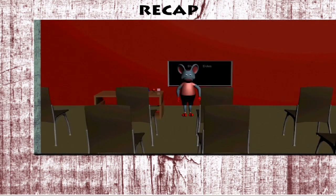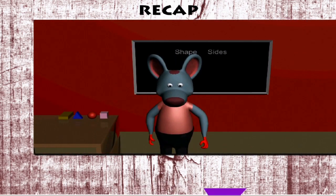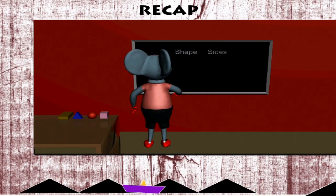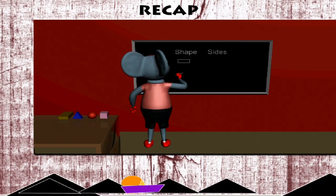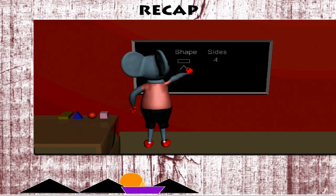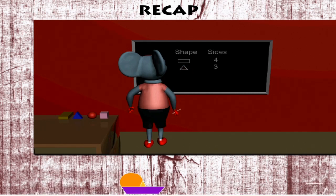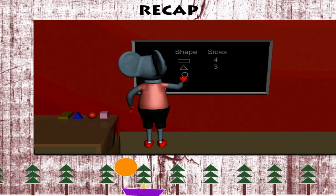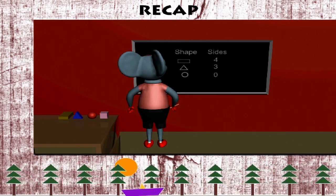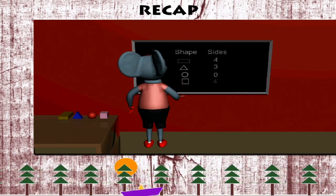Recap. Robbie Mouse is busy on the blackboard. He is reminding you of the basic shapes. A rectangle has 4 sides, a triangle has 3 sides, a circle has 0 sides, and a square has 4 sides.